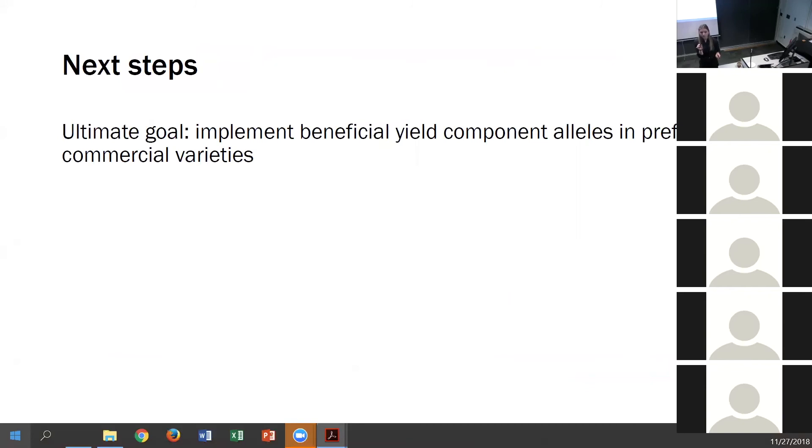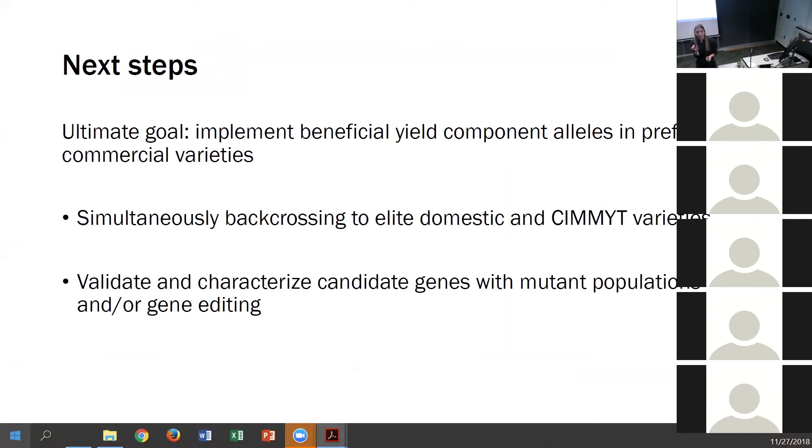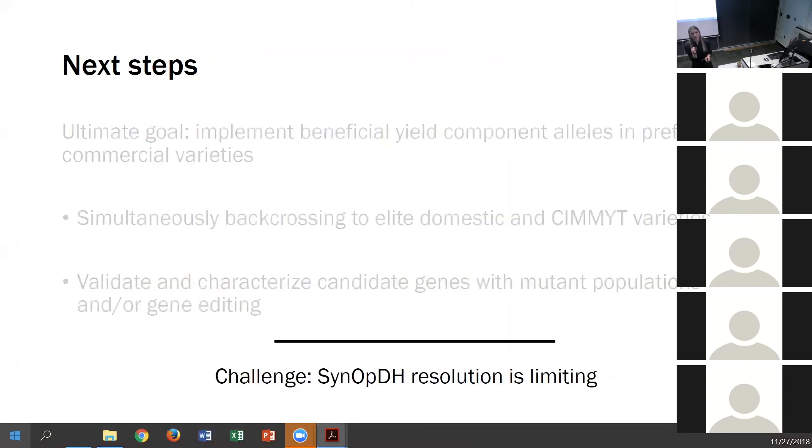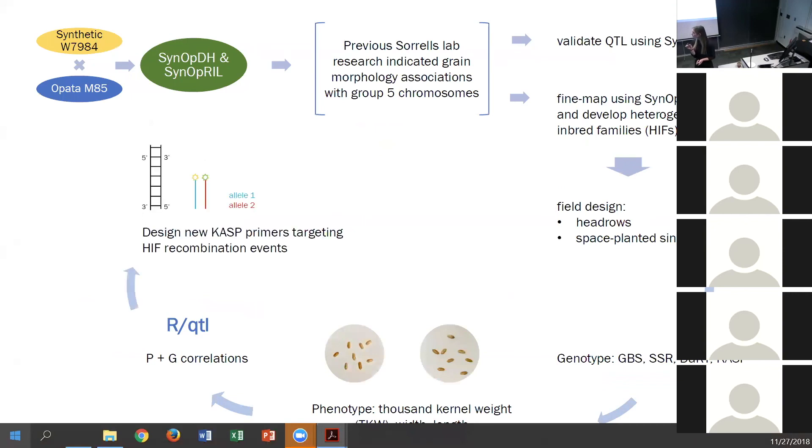Our ultimate goal is to be introgressing these genes into varieties that farmers like to grow. We're doing this simultaneously by backcrossing the genes as we continue to fine map them into elite varieties grown by domestic farmers as well as through the Wheat CAP's collaboration with CIMMYT, and we'll continue to pursue the identification of candidate genes and then further identify and validate the gene architecture through mutant populations and then potentially gene editing if that suits our purposes. A challenge that I mentioned is that the doubled haploid population has limited resolution, but if we return to our methodologies and strategies, I can develop CAST primers that target recombination events at our QTL taking place in the segregating HIF population. Over 200 HIF plants were harvested from the field this summer and they've been genotyped and I'm in the process of phenotyping those and those correlations will lay a strong foundation for the continuous fine mapping of these traits and our field plantings this summer.